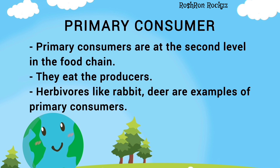They eat the producers. Herbivores like rabbit and deer are examples of primary consumers.